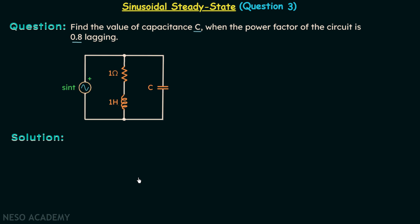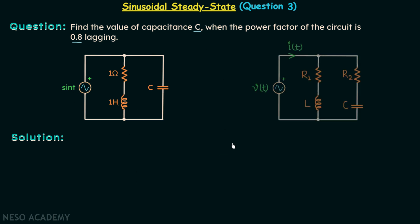Before we dive into the solution, I want to discuss one general case. When you compare this circuit with this circuit, you will find there is only one difference: here we have R2, but here we don't have any resistor connected in series with the capacitor. So R2 is equal to 0 in this case, and we will first do the analysis of this general case.